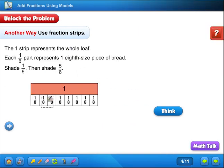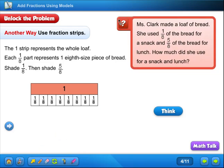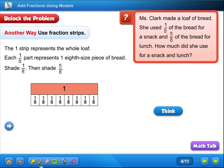Alright, let's go on to the next one. Let's pull out the problem here. It's the same problem, so I'm just going to underline it the same way. 1 eighth for the snack. 5 eighths for the lunch. And they want to know how much did she use for a snack and lunch. So we're going to shade this way. This right here represents the whole thing. And then all of these are the slices.